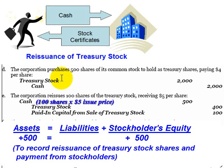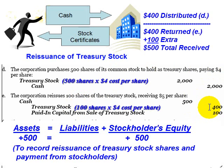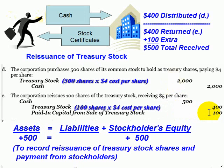When we credit the treasury stock account, we are increasing owner equity. Treasury stock must be credited for the original cost of the shares when they were purchased — namely $4 per share. So when we issue the 100 shares, we'll credit treasury stock for 100 shares times $4, which is $400. In effect, the stockholders are giving us back the $400 we gave them when the treasury shares were first purchased, but they're also giving us an additional $100, which we treat as more paid-in capital above and beyond what we originally received.